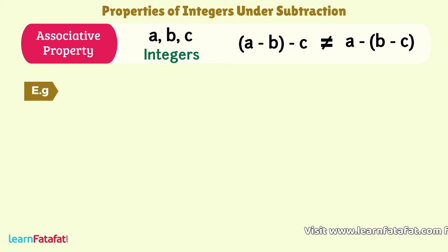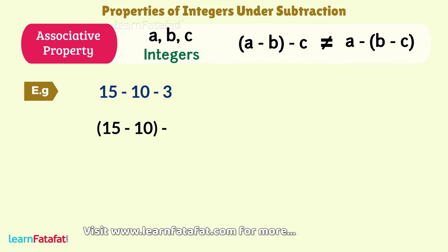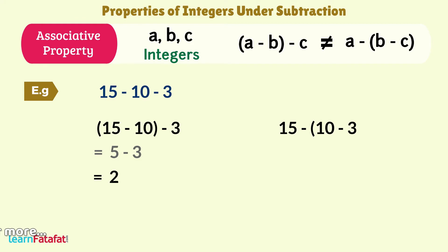For example, 15 minus 10 minus 3. If grouped like this, then the result is 2. But if grouped like this, then the result is 8. So, subtraction of integers is not associative. The given order must be followed to find the correct result.